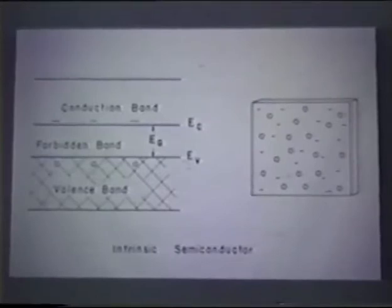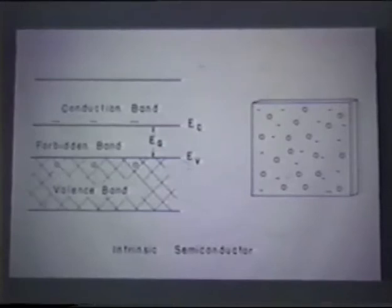If you heat the semiconductor to high temperature, you can excite electrons from the occupied valence bonds into the conduction band. Then you get what's called intrinsic conductivity. As indicated on the right, you have mobile holes, which correspond to missing electrons from the valence band, and mobile electrons of negative charge.